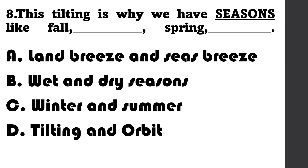Number 8: This tilting is why we have seasons like fall, blank, spring, blank. A. Land breeze and sea breeze, B. Wet and dry season, C. Winter and summer, D. Tilting and orbit.